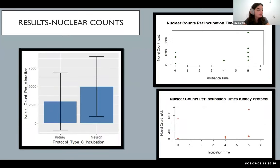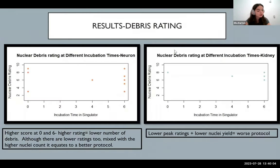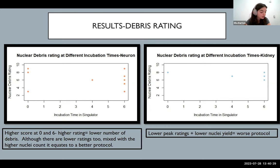From these experiments, I was able to conclude that on average the neuron protocol seemed to have the best results with a higher average nuclei count per incubation time and a smaller standard deviation, meaning less variability compared to the kidney protocol. You can see these results in the figure, where the standard error bars represent standard deviation and there are just higher nuclei counts in the neuron protocol. Looking at the R-studio graphs, the neuron protocol has higher peak debris ratings at zero and six-minute incubation times compared to the kidney protocol experiments. A higher debris rating means less debris present in the nuclei visualization, so a higher rating is better. Mixed with the higher nuclei yield, this equates to a better nuclei isolation protocol.